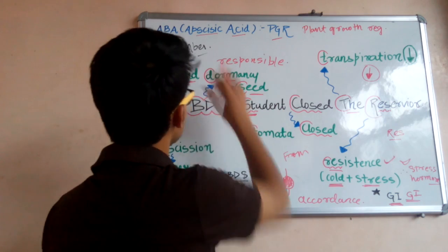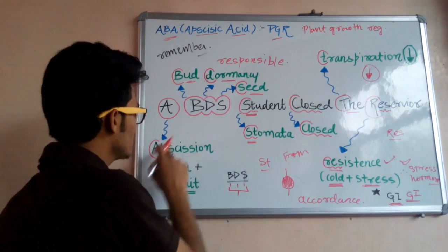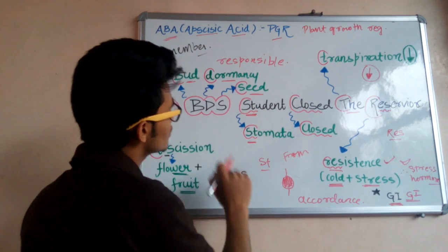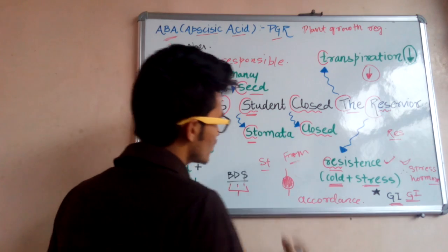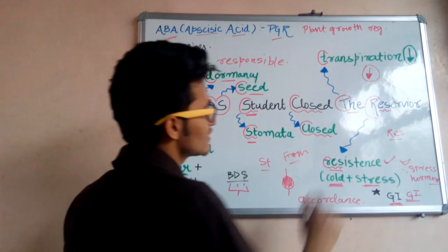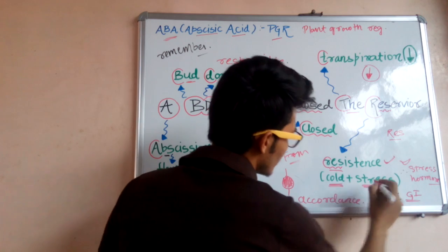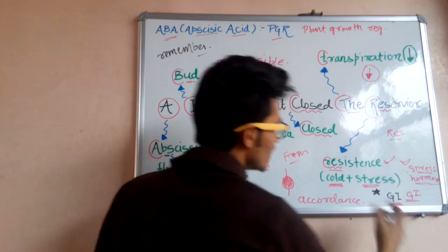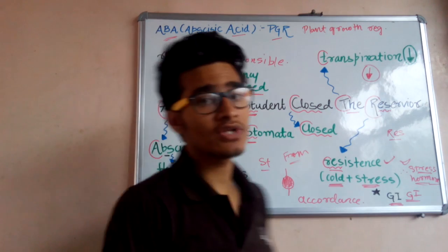So what are the functions of ABA? A BDS student closed the reservoir, which simply means: abscission of flower and fruit, bud and seed dormancy, student means stomata, close means closed. Therefore the stomata are closed, by virtue of which the transpiration rate decreases, and the resistance from cold as well as stress is provided by ABA. Therefore it is also called stress hormone and therefore it is a kind of growth inhibitor.